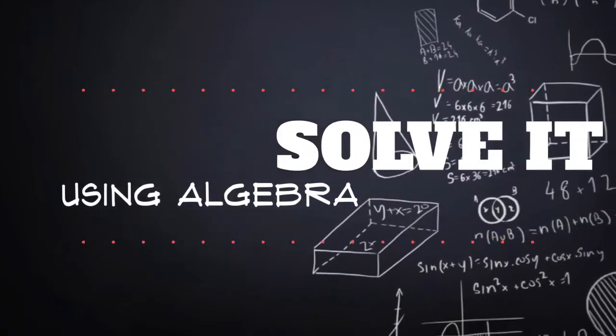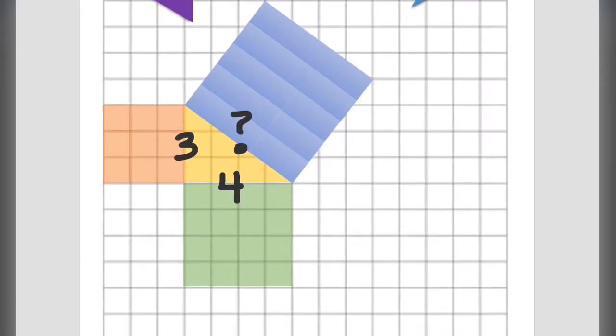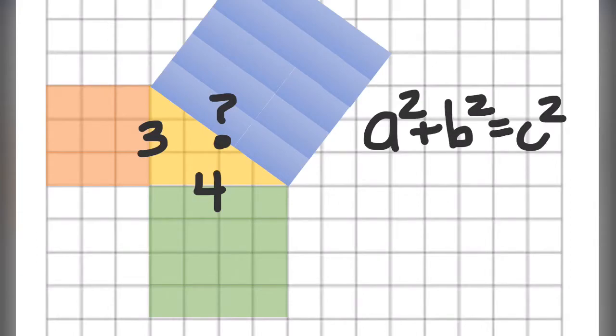So we're given two side lengths, three and four, we need to find the third. Well, the theorem says A squared plus B squared equals C squared. Let's fill in what we know.